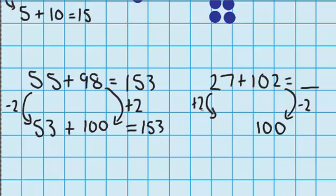So this side gets bigger by 2. And it now becomes 29. Now I've got a much easier question to answer. 29 plus 100 is 129. So 27 plus 102 is 129.